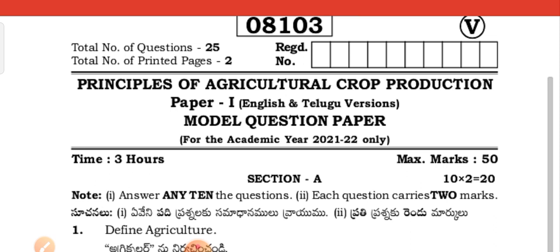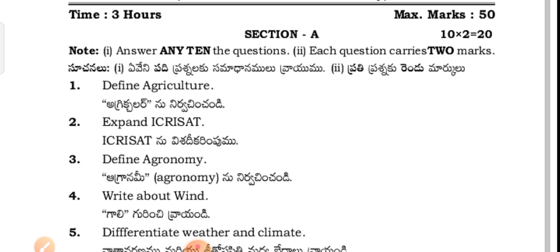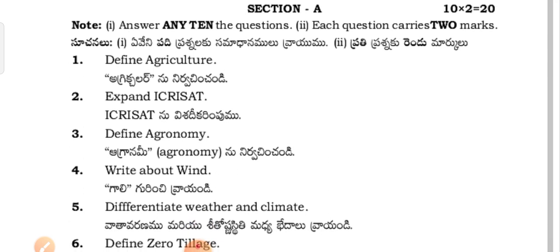The first question is 1 by 1. Section A: Define Agriculture. Agriculture nirvachin channdi.